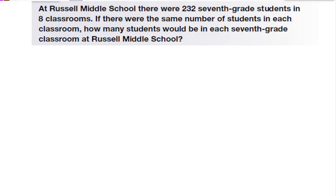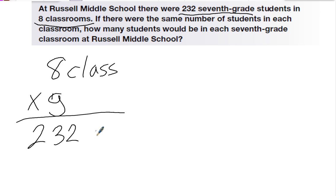On this next problem, we have at Russell Middle School, there are 232 7th grade students in 8 classrooms. If there are the same number of students in each classroom, how many students would be in each 7th grade classroom at Russell Middle School. To put it in the same format, the number of groups is that I have 8 classrooms, times by the number of students that go into each classroom, equals my total of 232 students.